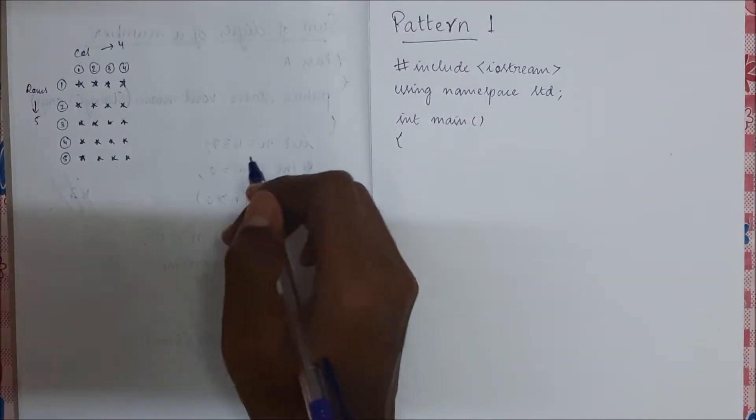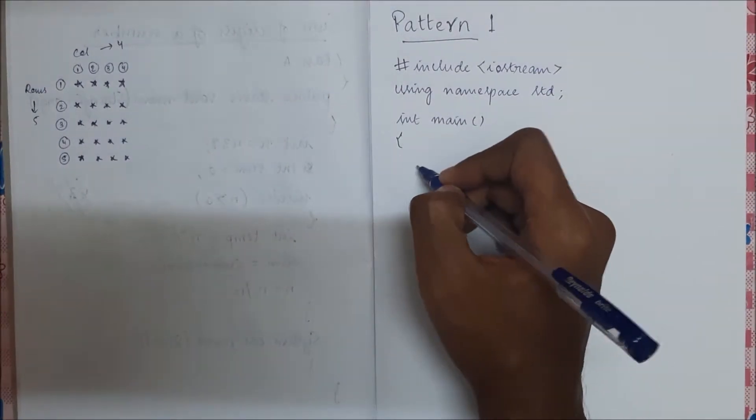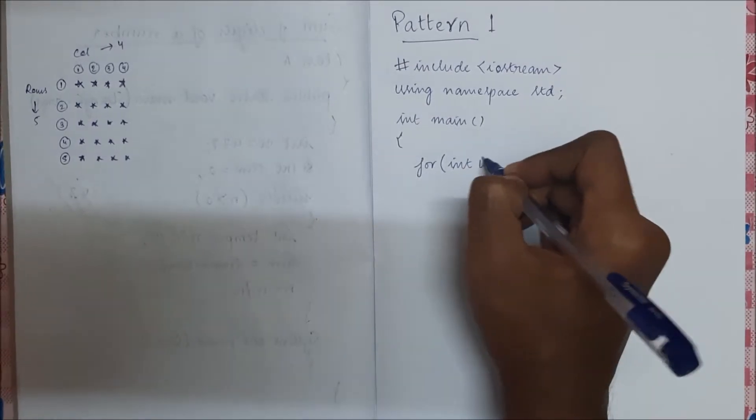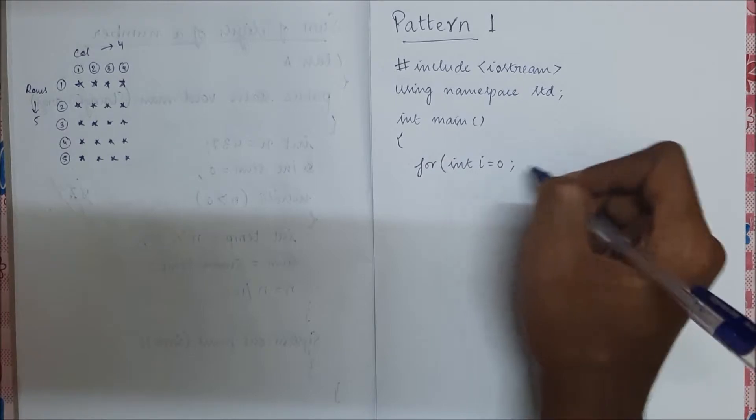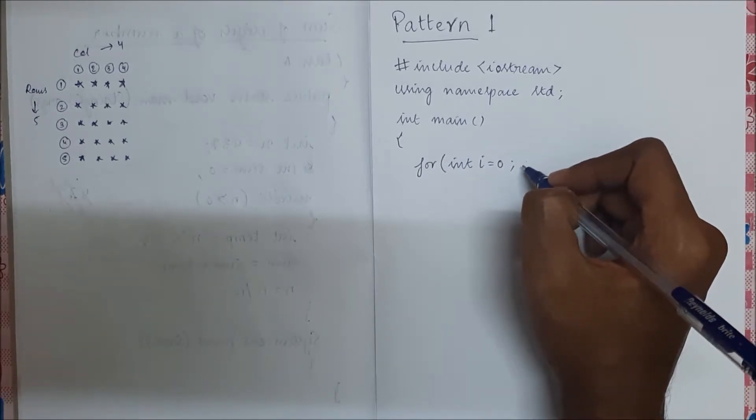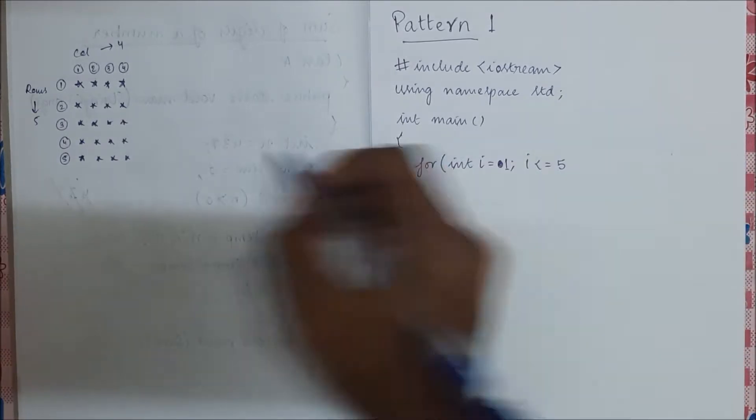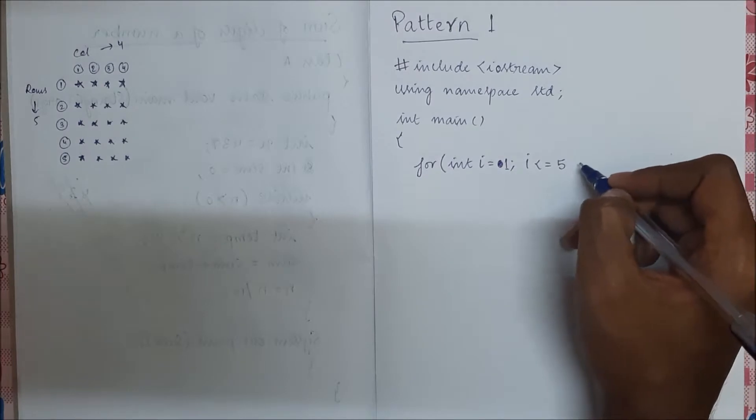So what I'm going to do is I'm going to write one for loop which is for the rows. For int i equal to one, i less than equal to five, since we have five rows here, and then i plus plus.